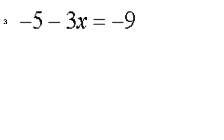Question 3: we're getting into our algebraic equations, so isolate the variable for x. Negative five minus three x is equal to negative nine.